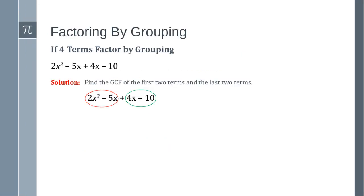Another example shows factoring out a binomial GCF. If both terms share a (2x−5) factor, you pull that to the front. The remaining parts — x and 2 — form the second factor. So the result is (2x−5)(x+2). Always ask yourself first: can I factor out a GCF? It makes the problem much easier 98% of the time.